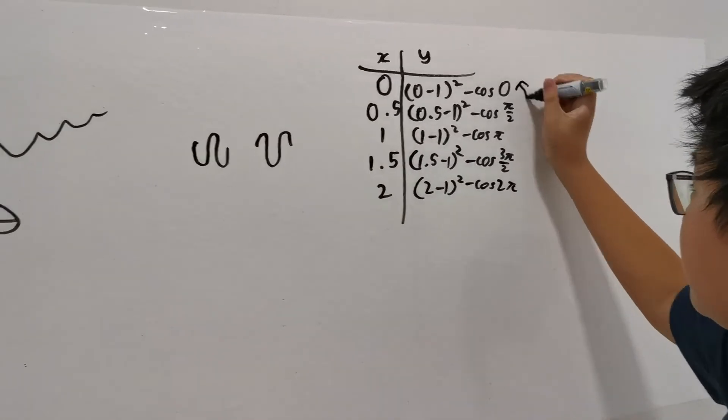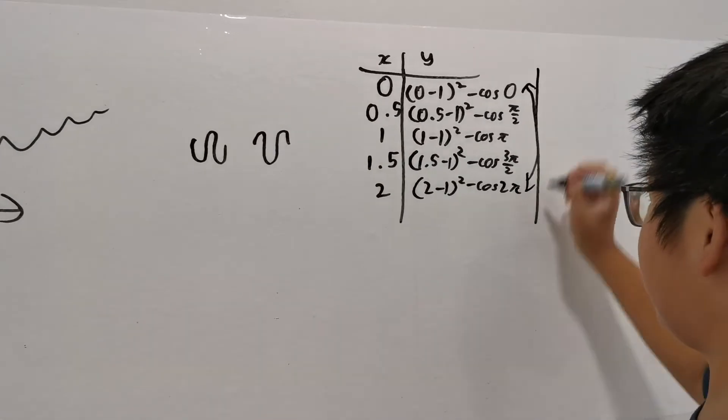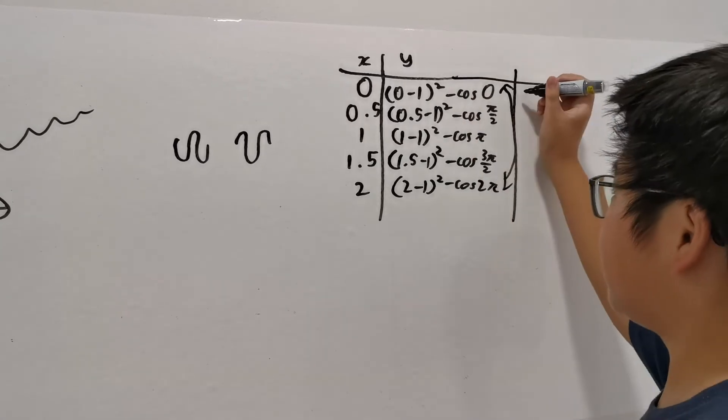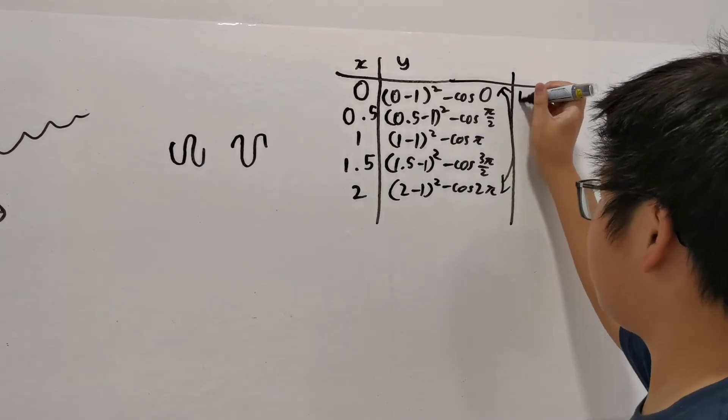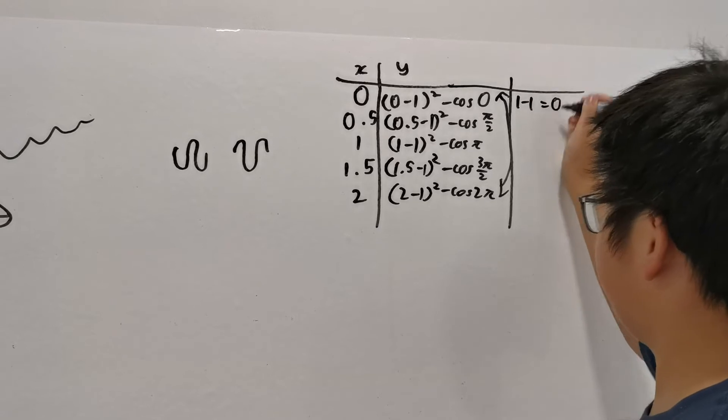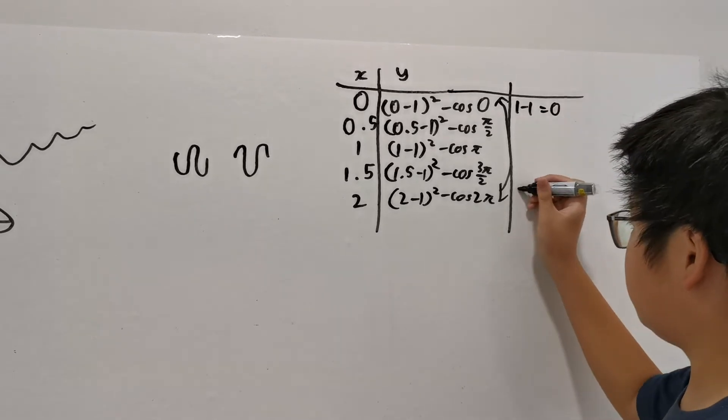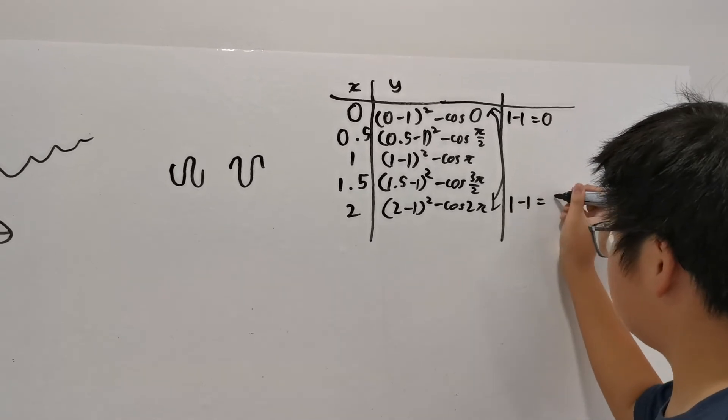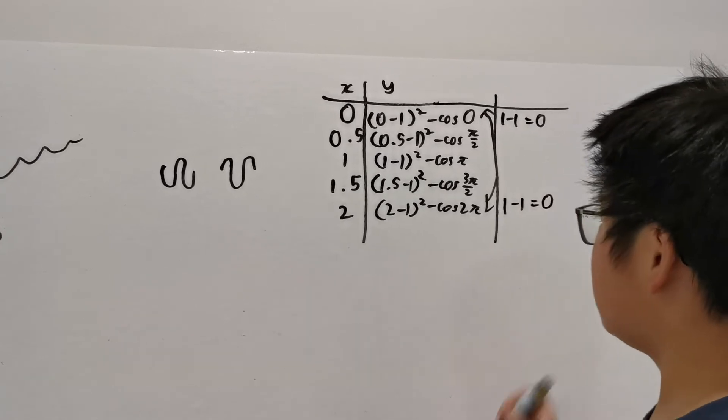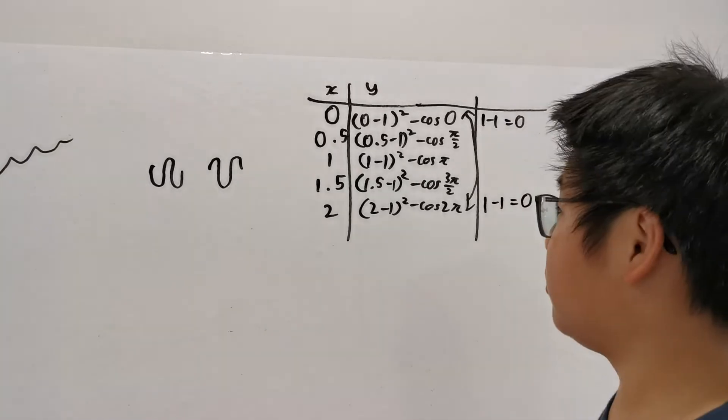As you notice, there is some kind of symmetrical structure, and there is. Let's calculate the first value, which amounts to 1 minus 1 equals to 0. And this also amounts to 1 minus 1 equals to 0. You can see there is some kind of symmetrical structure here.